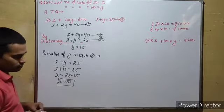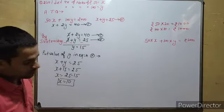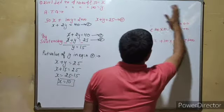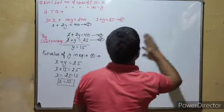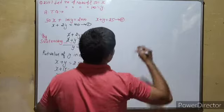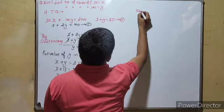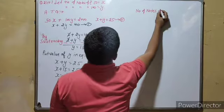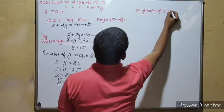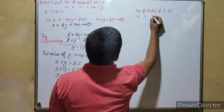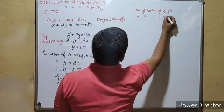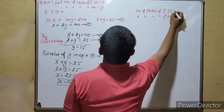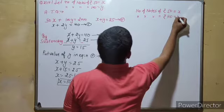So x is equal to 10. The question asks to find the number of notes of rupees 50 and 100. So the number of notes of Rs. 50 is x, which is 10, and the number of notes of Rs. 100 is y, which is 15.